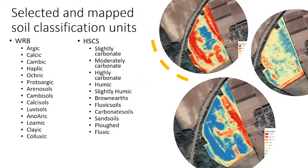Based on the local conditions, the following WRB classification units were used along with the Hungarian soil classification system units.